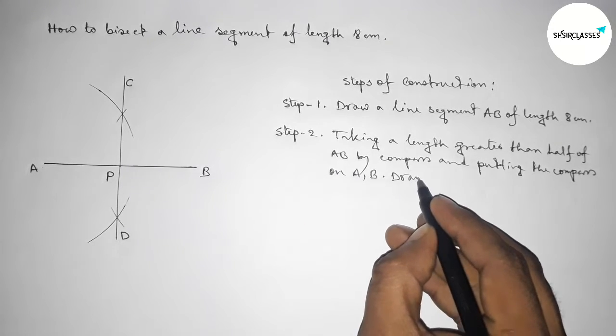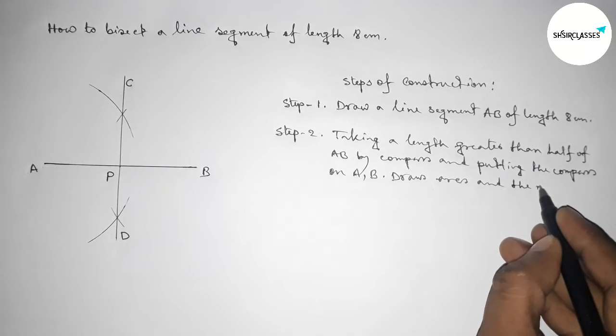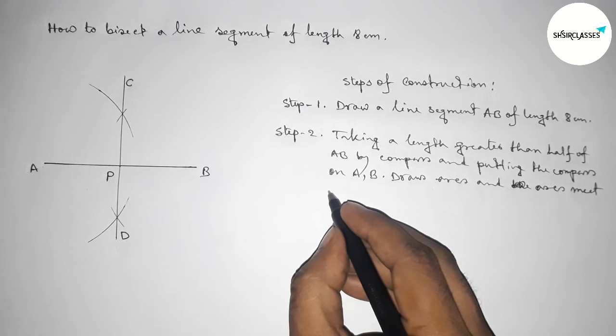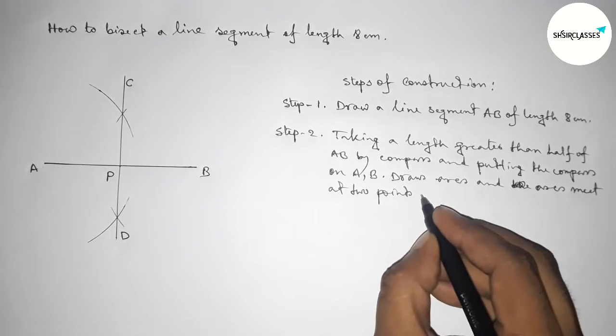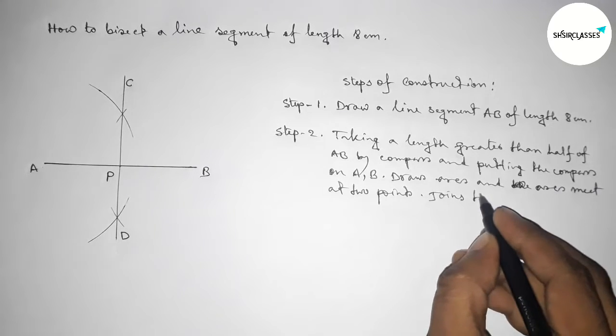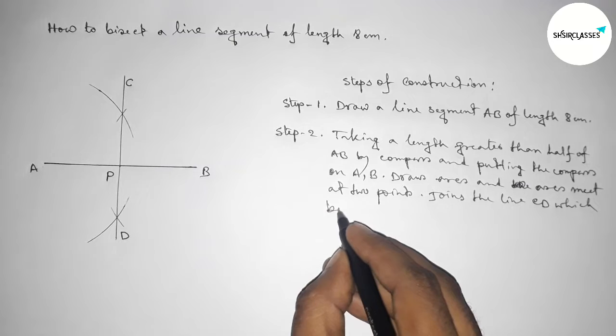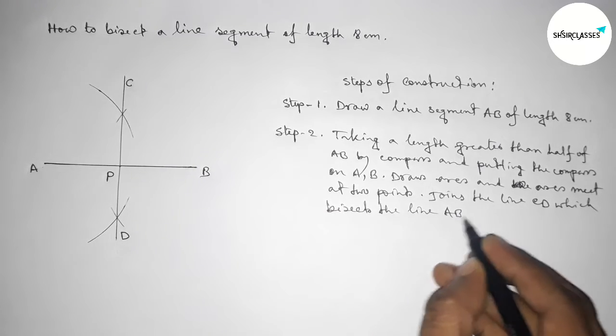And drawing arcs, and the arcs meet at two points. Now joining the line CD which bisects the line AB at the point P.